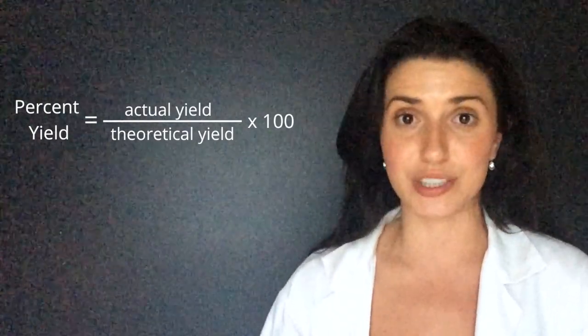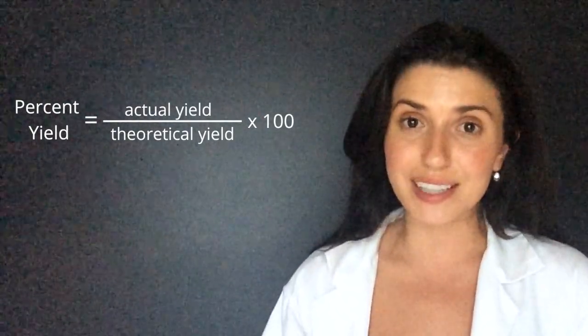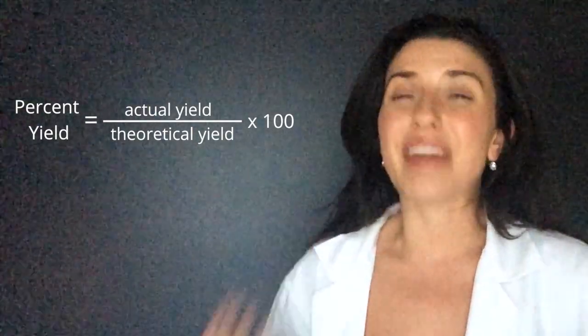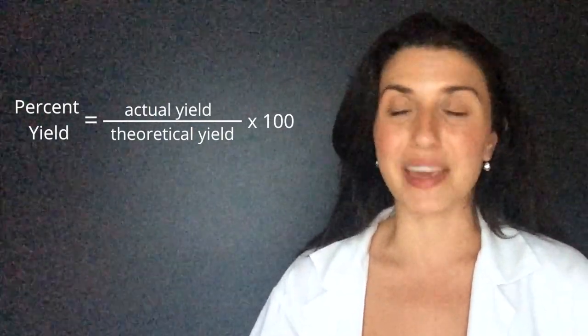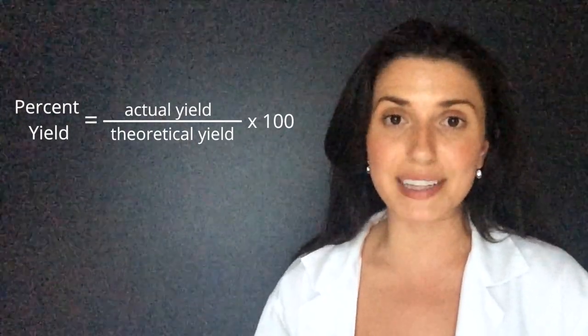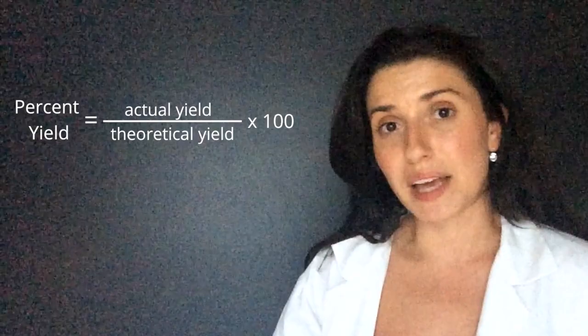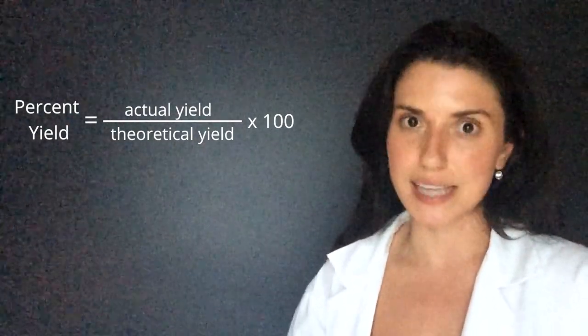Now the theoretical yield is what we calculate using stoichiometry, and that would be the yield that would come if everything in your experiment went perfectly and all the product was collected. Then we multiply that by 100 to get the percentage.